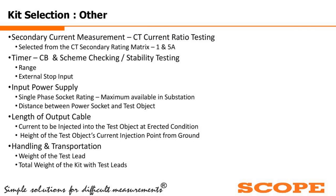Regarding the length of the output cable: when testing a current transformer, the height of the CT from ground level is roughly 5 to 7 meters, so the output cable length must be selected accordingly. We calculate the current to be injected at erected condition and the height of the test object to set the specifications. For handling and transportation, the weight of the test kit should be as low as possible — both the individual unit and total weight including test leads. These are all the parameters we need to consider for selection of a primary current injection test set.